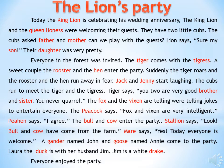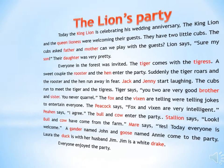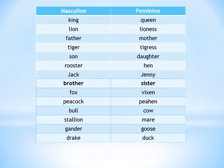Everyone enjoyed the party. Now from the story, let's pick up the masculine noun and then form the feminine. King — Queen. Lion — Lioness. Father — Mother. Tiger — Tigress.